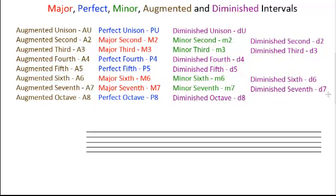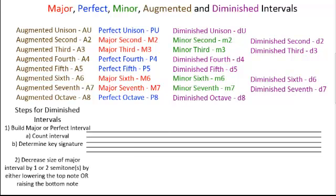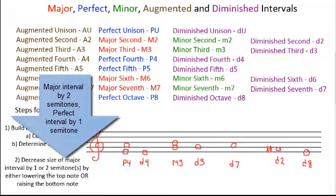So let's try to build some ascending diminished intervals. The first step is to build the major or perfect interval. The first two examples already have the major and perfect interval given, so we don't have to do that first step. The next step is to decrease the size of the major or perfect interval by one or two semitones — one semitone for perfect, or two semitones for major.